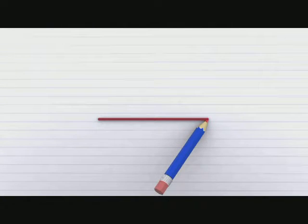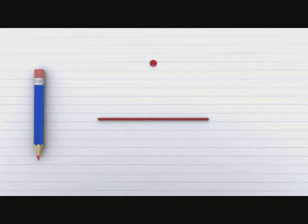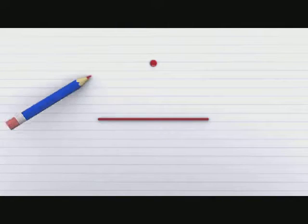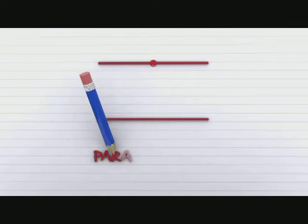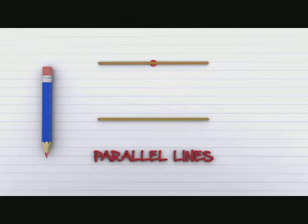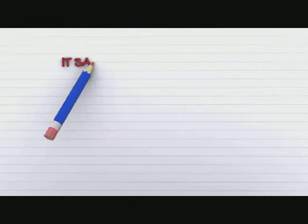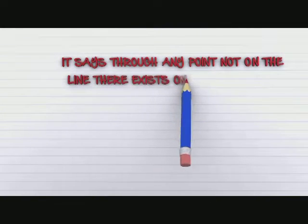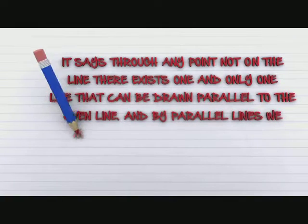This starts off with a line. It says, through any point not on the line, there exists one and only one line that can be drawn parallel to the given line. And by parallel lines, we mean lines that never intersect. This seems different from other axioms, right? Not so self-evident. Many mathematicians struggled to accept this axiom.